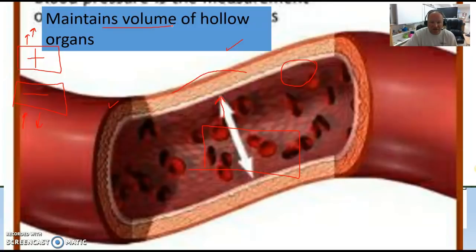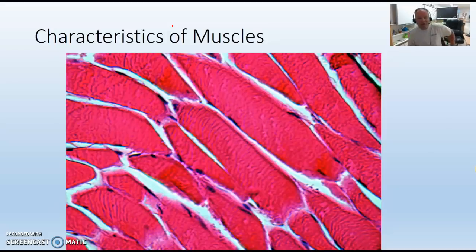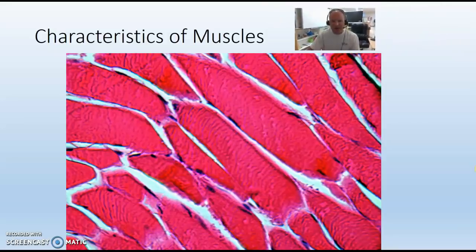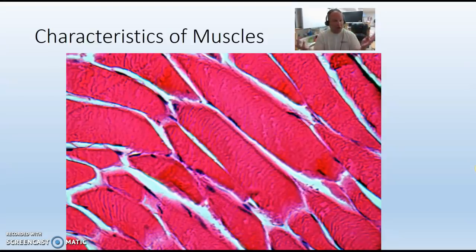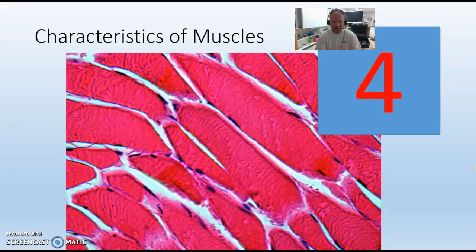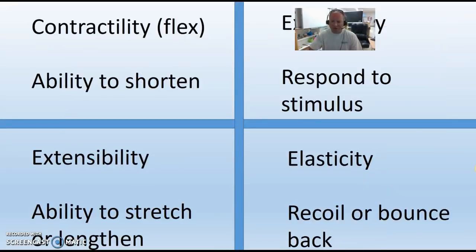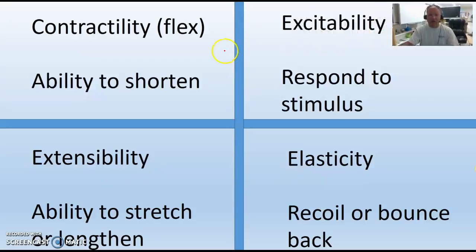Now let's move to the characteristics of muscles. Every muscle must follow four rules — it must have all four characteristics, or it's not a muscle. The problem is they all sound alike. The four characteristics are: contractility, excitability, extensibility, and elasticity.